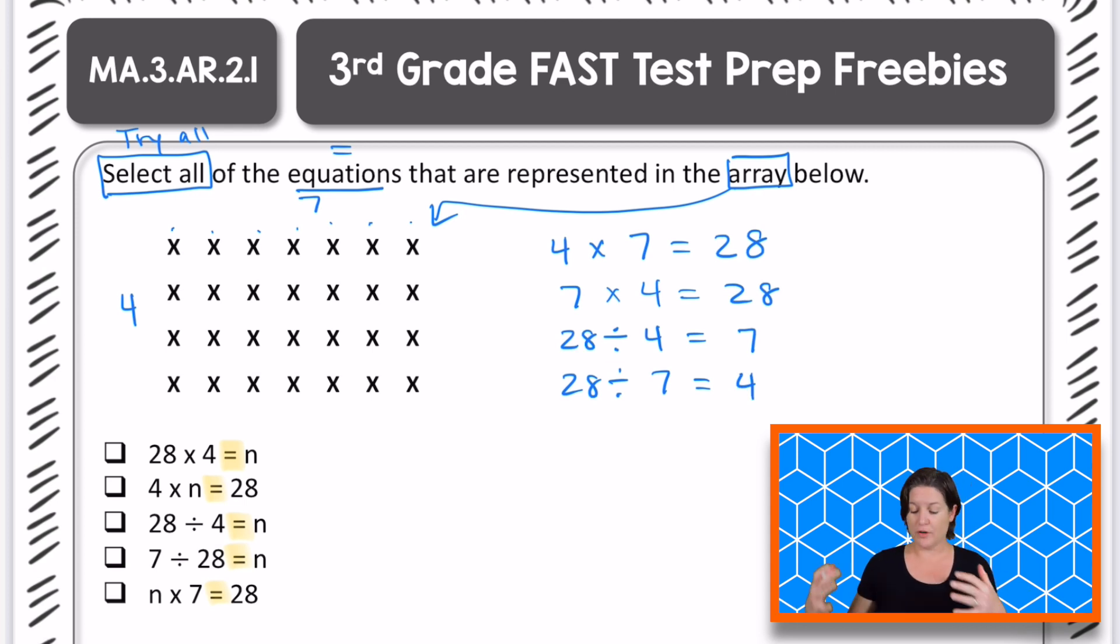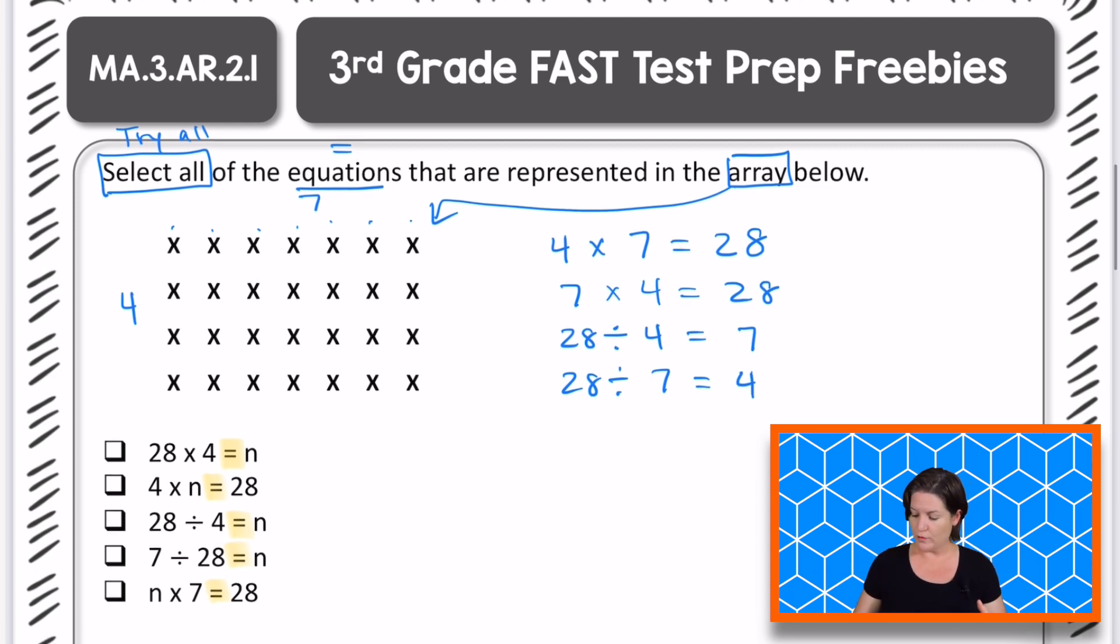Alright. Now we have all of our equations that are represented. Let's go over here and match them up. So for the first one, it says 28 times four equals N. Do we have 28 rows or 28 columns? No, we have 28 total amount. So this one right here, the 28 is in the wrong place. So we can eliminate the first choice.